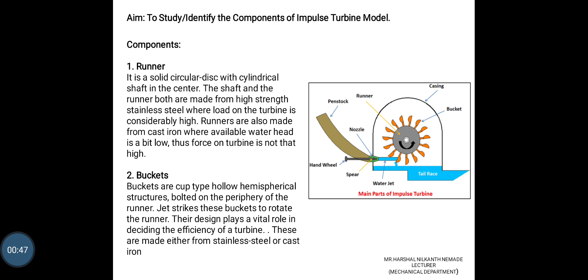Thus the force on the turbine is not that high. Buckets are cup-type, low hemispherical structures bolted on the periphery of the runner. A jet strikes these buckets to rotate the runner. Their design plays a vital role in deciding the efficiency of the turbine. These are made either of stainless steel or cast iron.